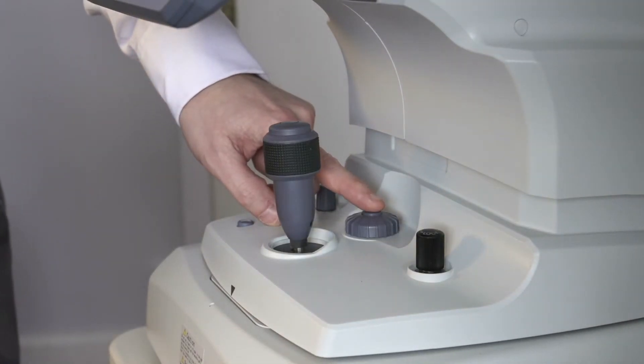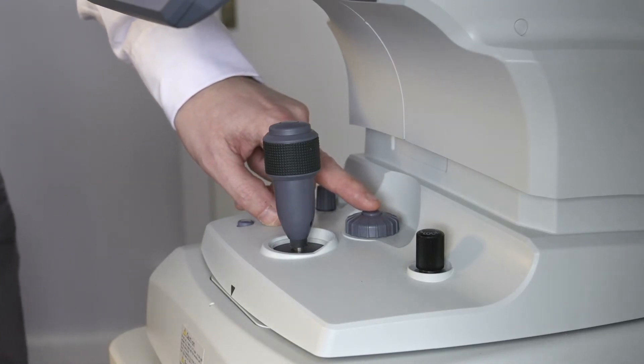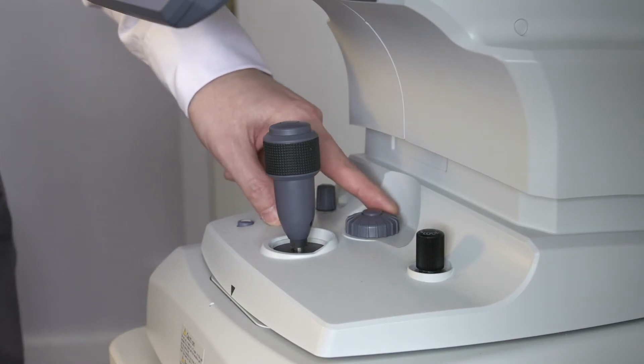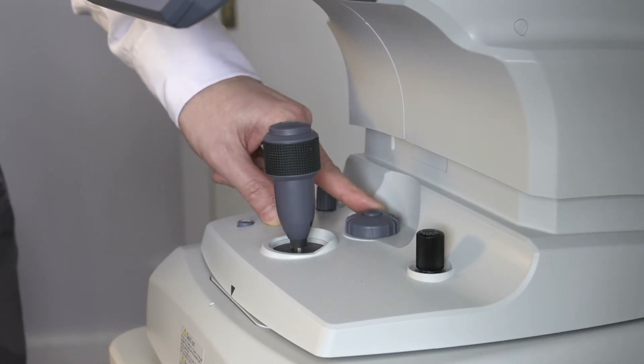At the back here, the button is used in manual mode when we are moving from anterior eye into the fundus. The wheel is used for manual adjustment of focus.